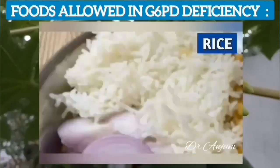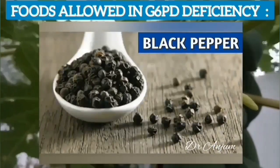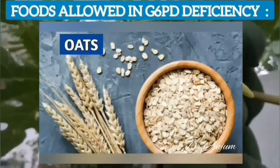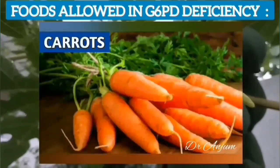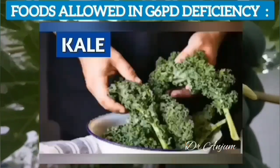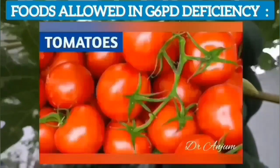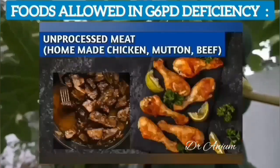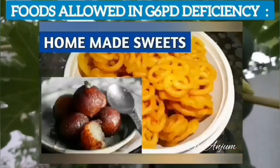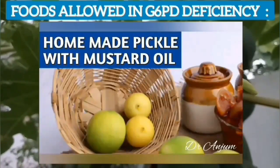Wheat, rice, natural vegetable oils and animal oils, black pepper, peppers, oats, carrots, spinach, strawberries, kale, barley, tomatoes, unprocessed meat, and home-cooked fresh fish are allowed. Homemade sweets, homemade jams, homemade pickle, and homemade ice cream are also permitted.